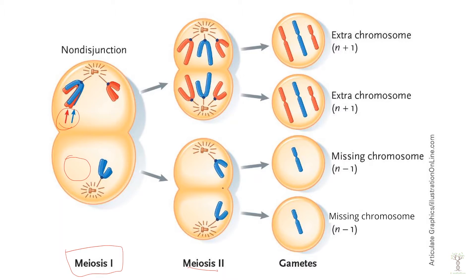Then in the second division, when the sister chromatids separate, there are going to end up being three chromosomes in this cell and only one chromosome in this cell. So then these gametes will have an extra chromosome and these gametes will have a missing chromosome.